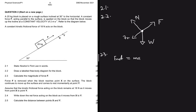Question 2.3 says calculate the magnitude of force F. When answering this type of equation, we start by saying F net equals ma — almost all the time. F net is what we have on the free body diagram, which is F applied plus all the other opposing forces.